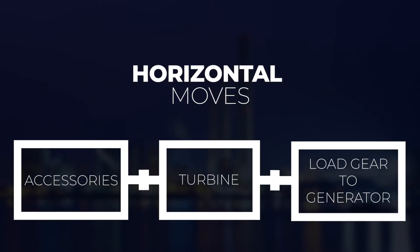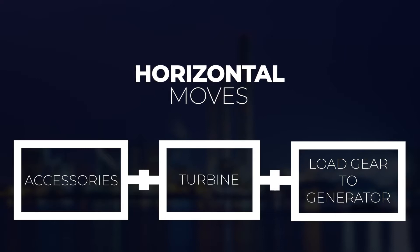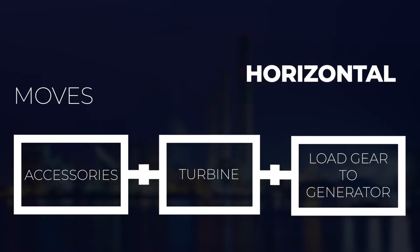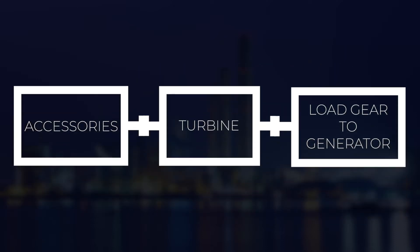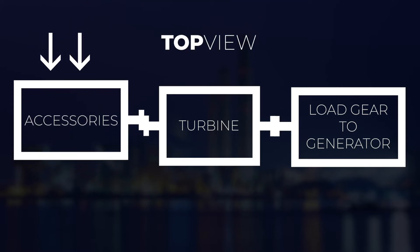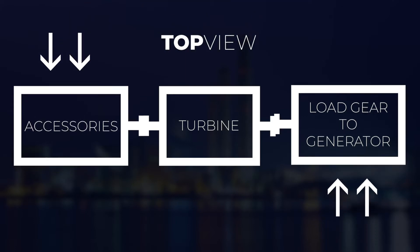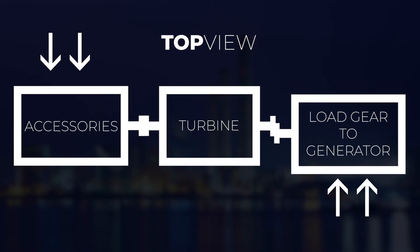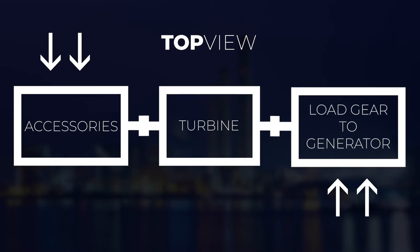Once we make all our vertical moves, we will make horizontal moves. Our horizontal moves are made by simply pushing over the skids to the left and the right side in order to correct the horizontal alignment.